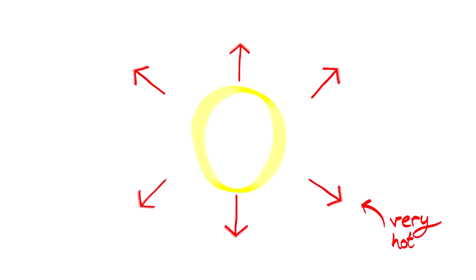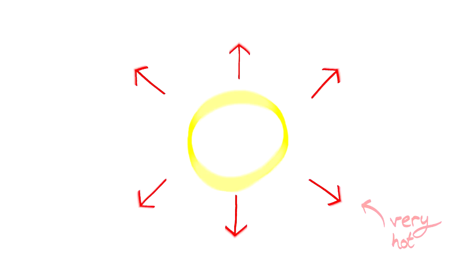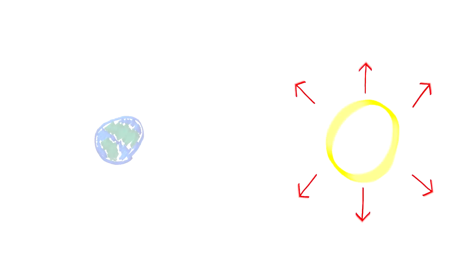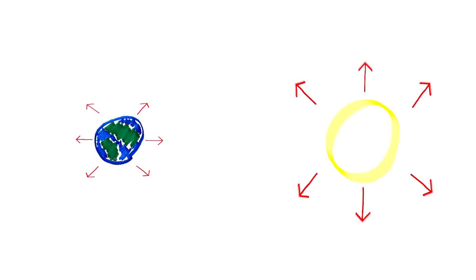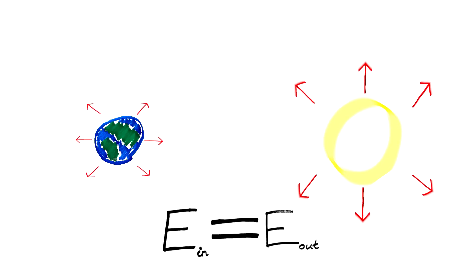So the Earth as an object gets all of its energy from the Sun, which as a very hot object emits an awful lot of energy, some of which is light, which we see, and some of which is thermal radiation, which we feel as heat. Now the Earth absorbs some of this radiation and it heats up until the amount of energy which it's radiating out equals the amount of energy which it's absorbing from the Sun.